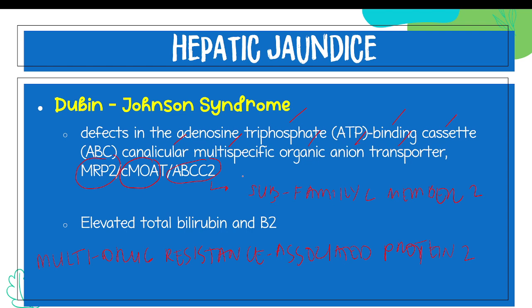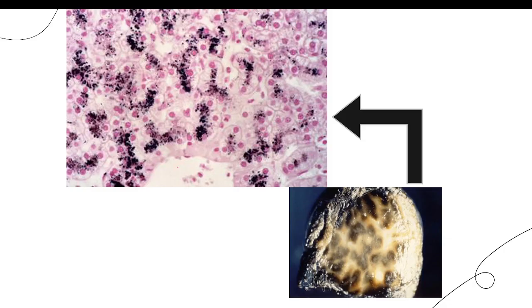If you check bilirubin levels in Dubin-Johnson, total bilirubin is increased — both B1 and B2 are elevated — but conjugated bilirubin is the most elevated. One key diagnostic feature of Dubin-Johnson is the appearance of dark-stained granules upon liver biopsy. Under the microscope, dark-stained granules are present in the liver.